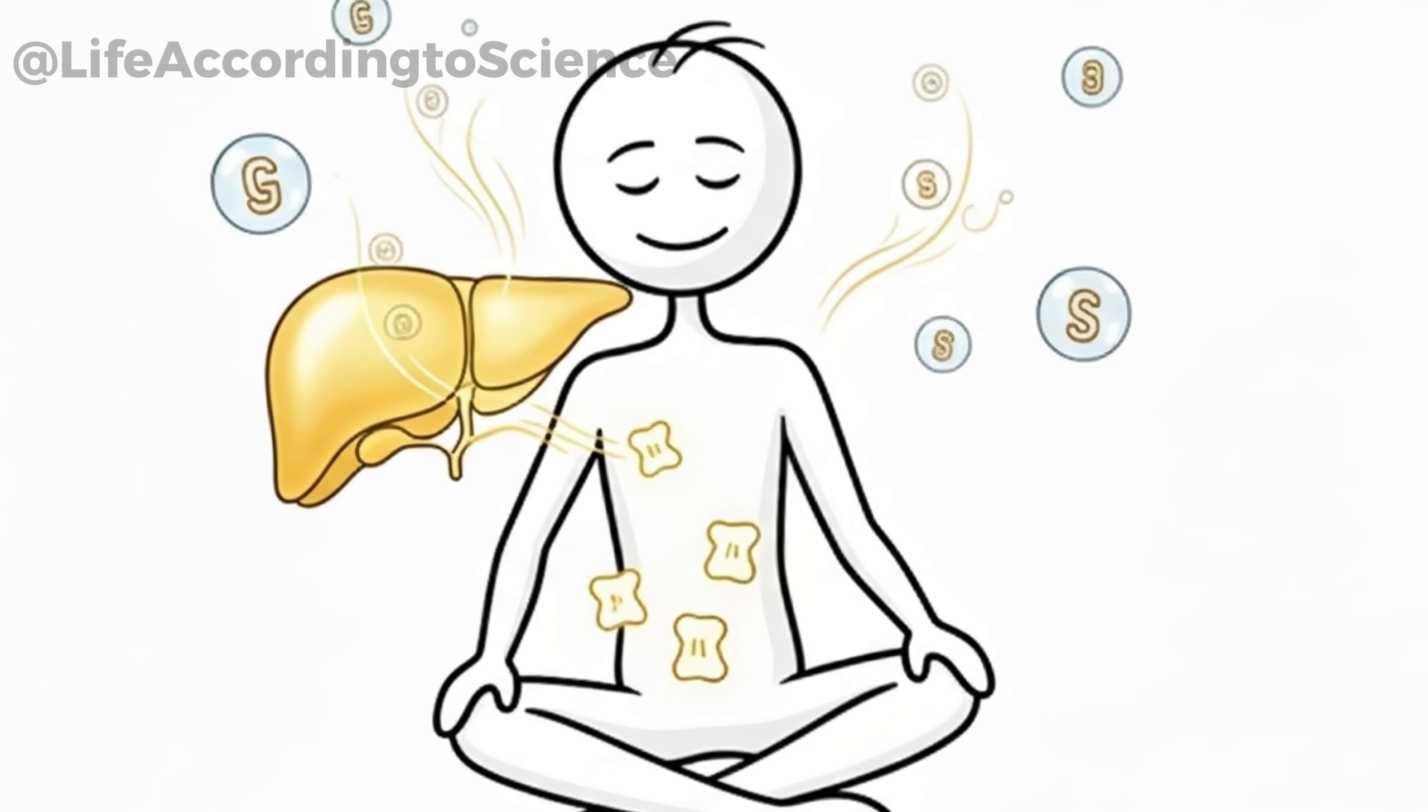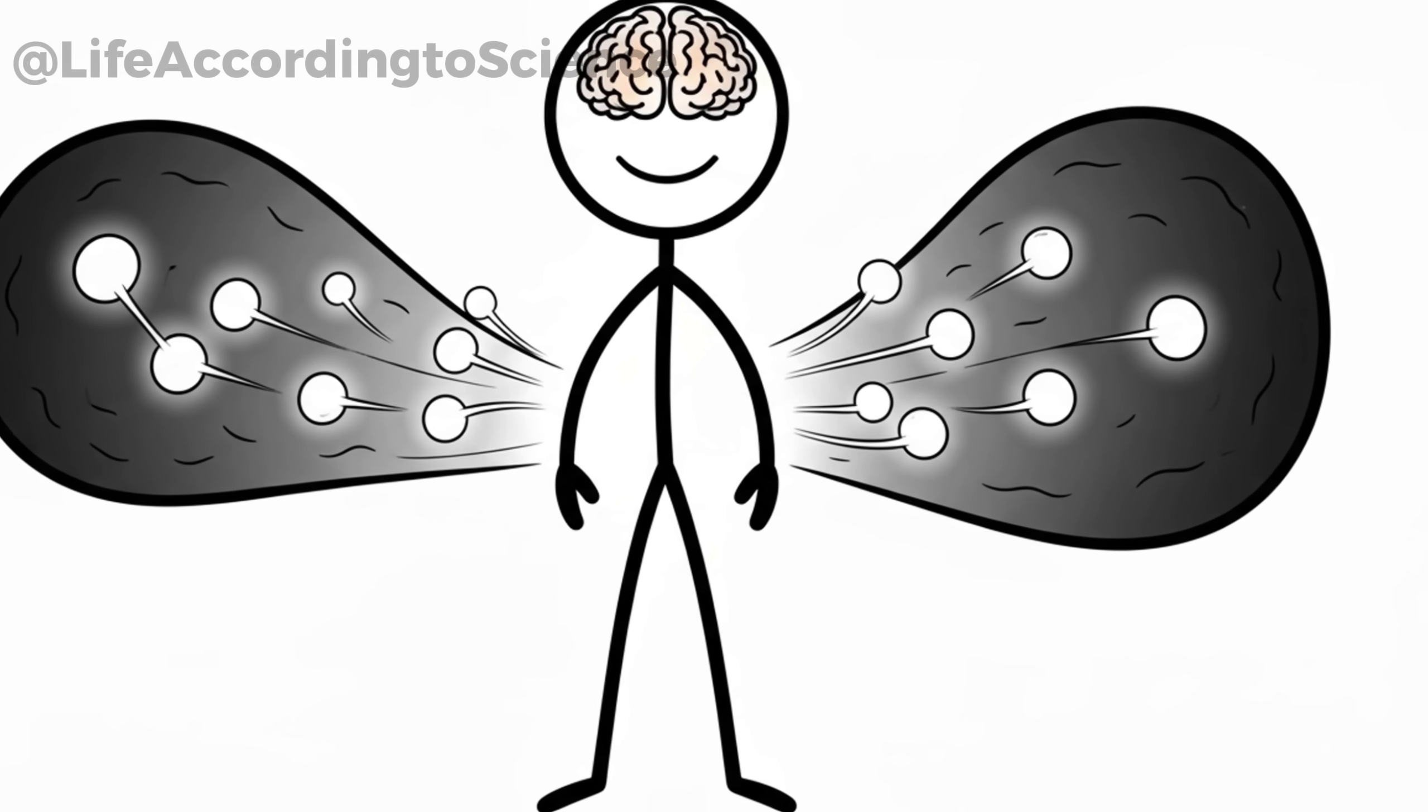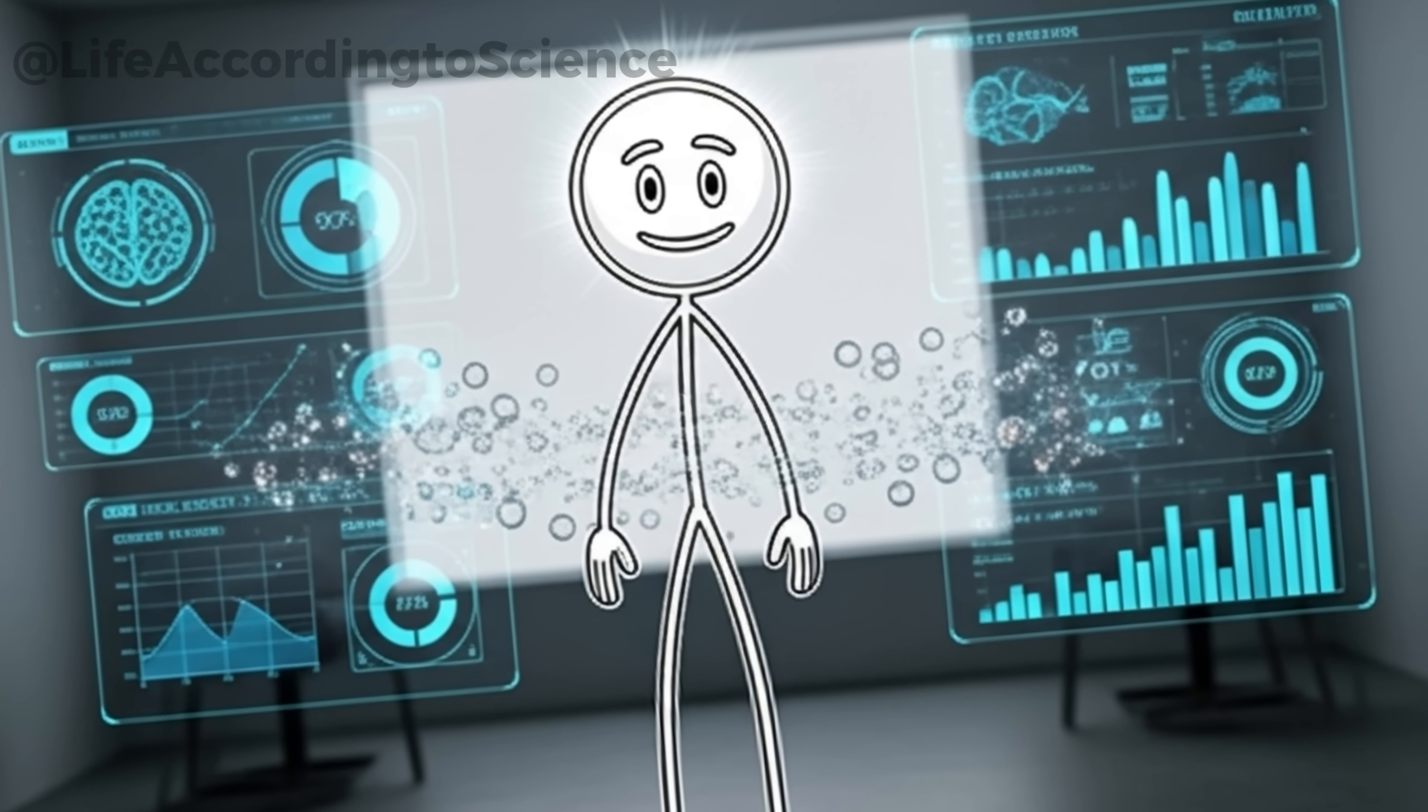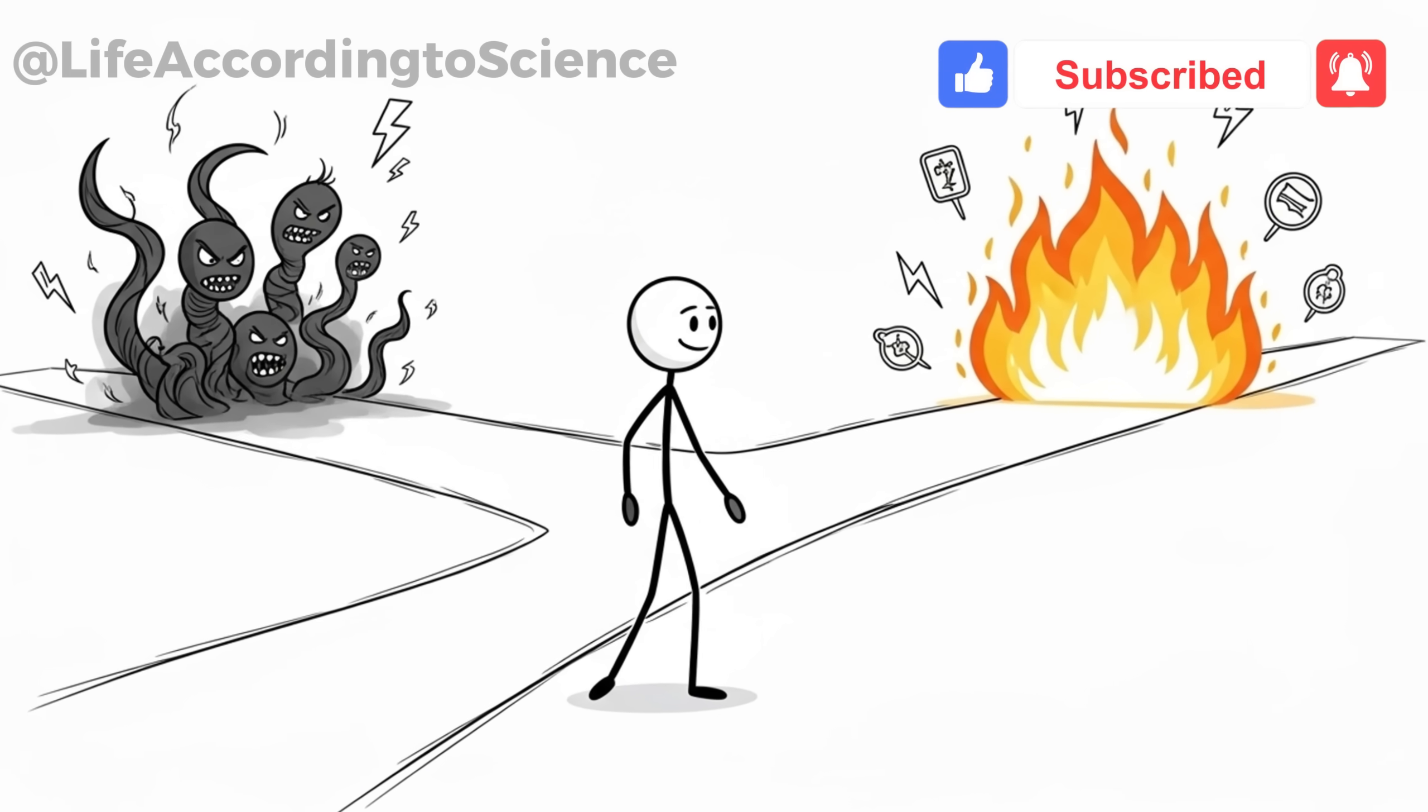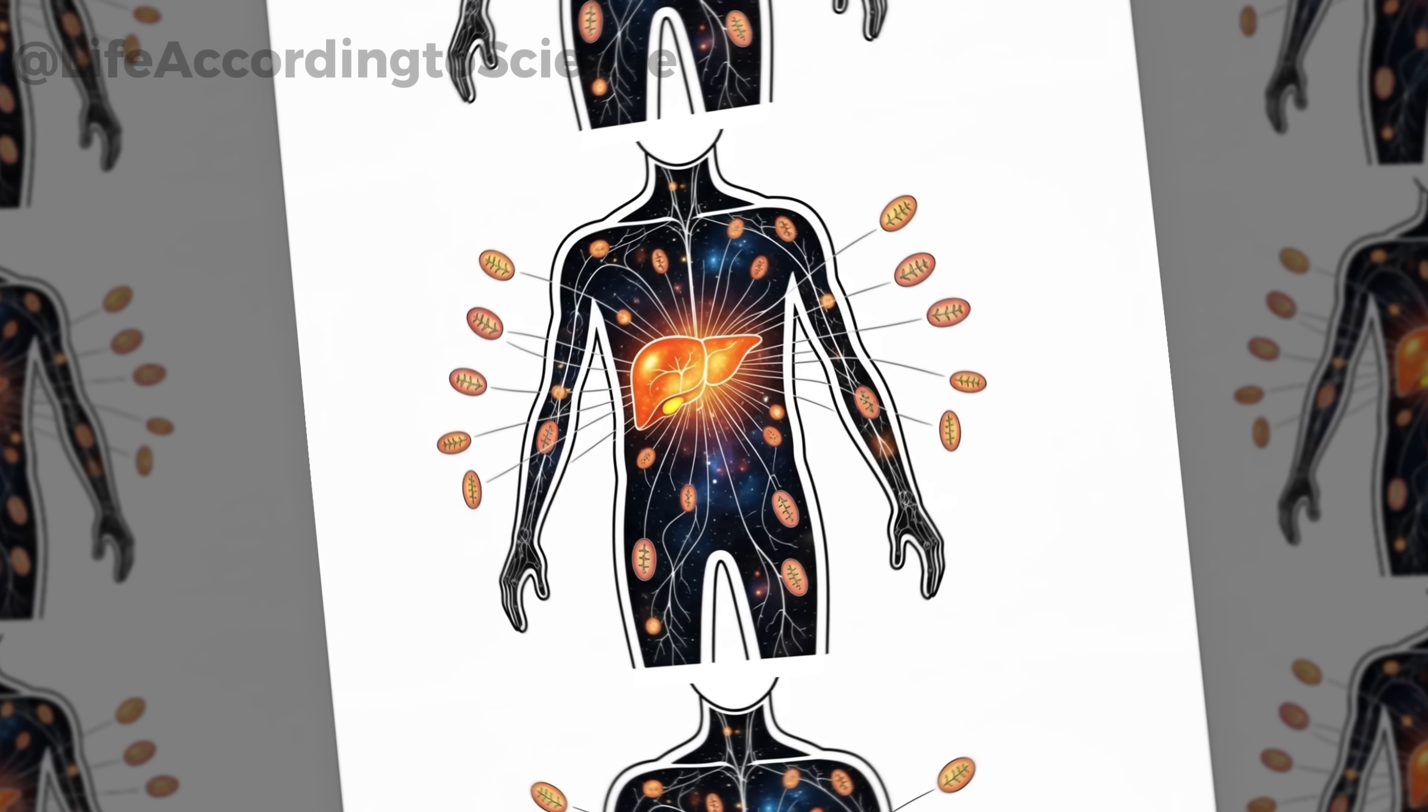As glycogen stores diminish, the liver begins producing ketone bodies, small molecules made from fat. These ketones are an alternative energy source, and your brain loves them. In fact, some studies suggest that ketones can sharpen mental clarity, which explains why some people report heightened focus during fasting. This marks a turning point. Instead of fearing hunger, your body starts embracing fat burning as a natural strategy, and your liver is the mastermind behind the shift.